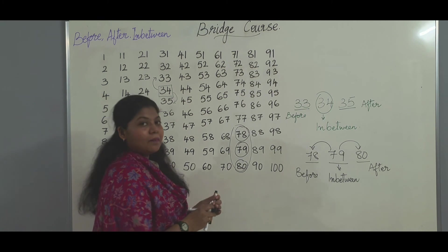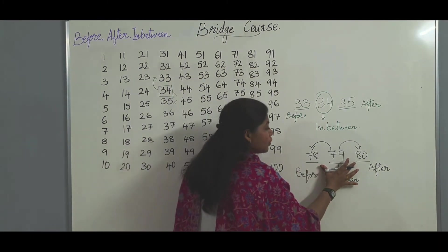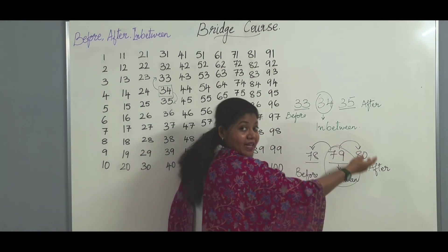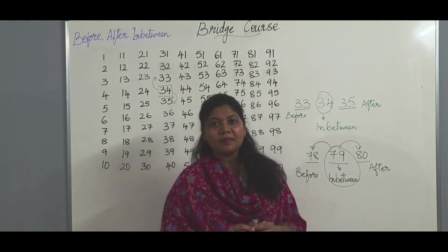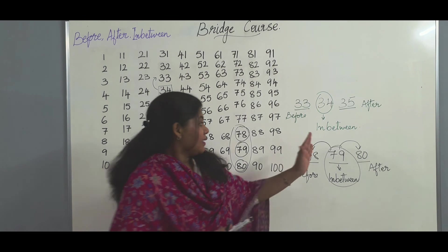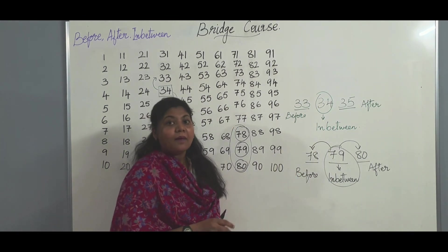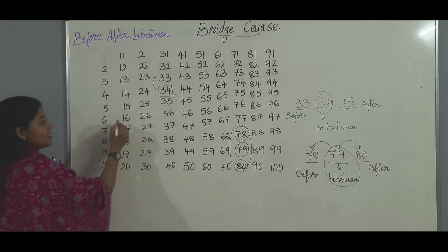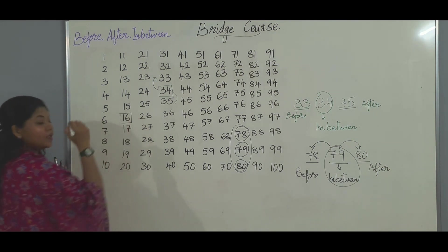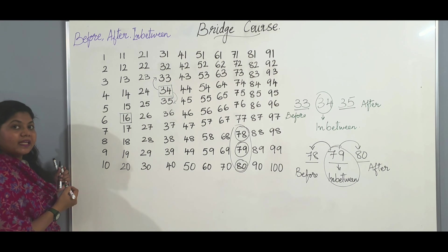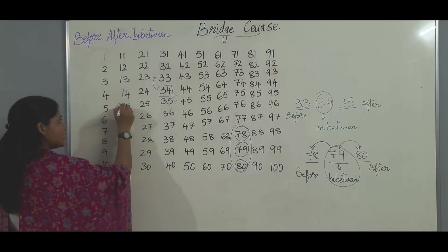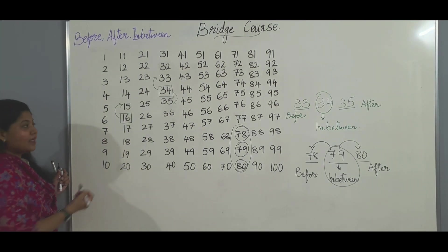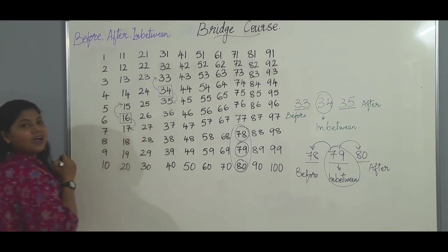Any number which lies in between two numbers is called the in-between number. The number very next to it is called the after number, and the number which comes just before it is called the before number. Now let us consider 16 as the in-between number. The number before 16 is 15, so 15 is the before number. And the number 17 becomes the after number.